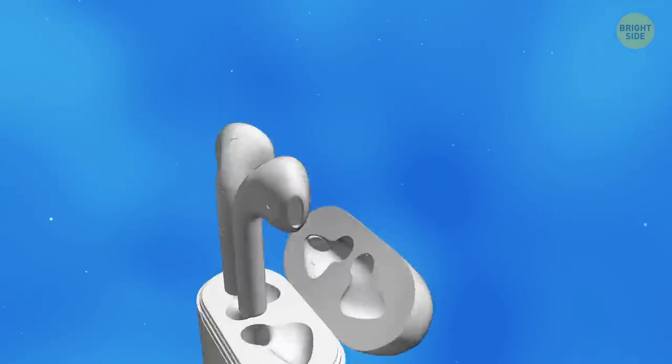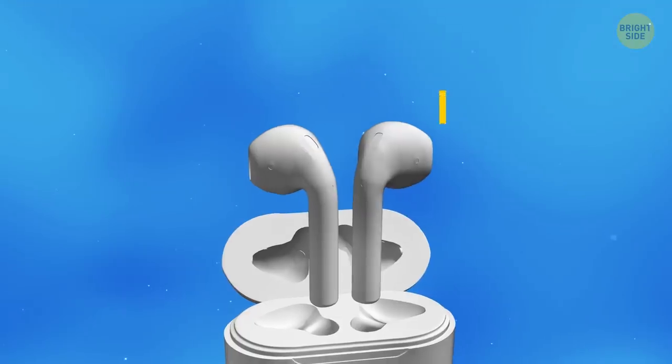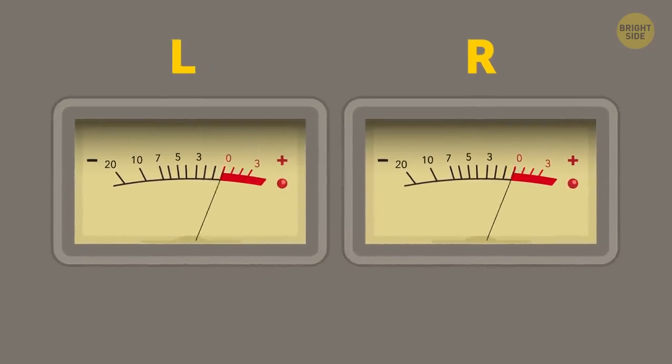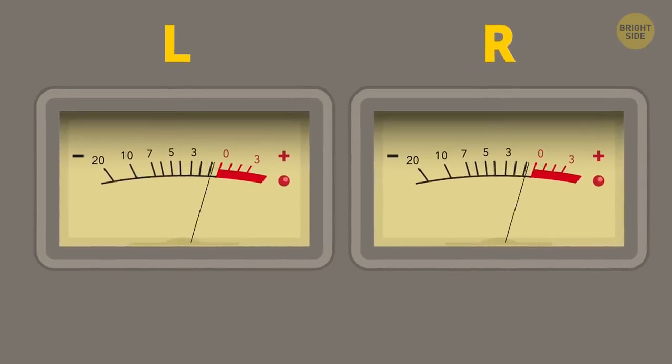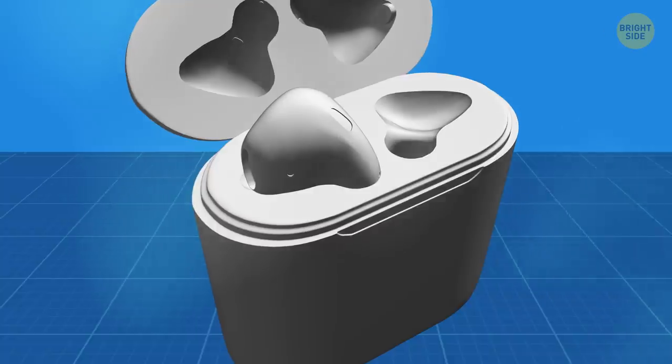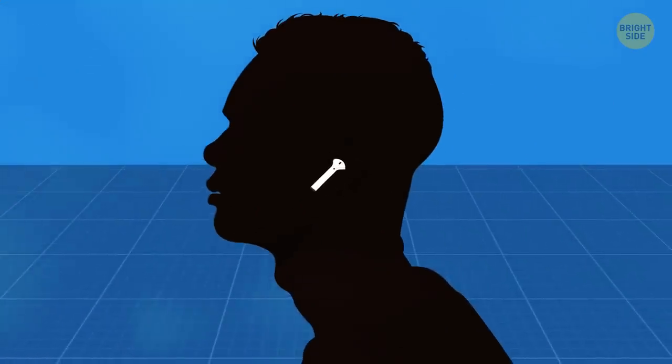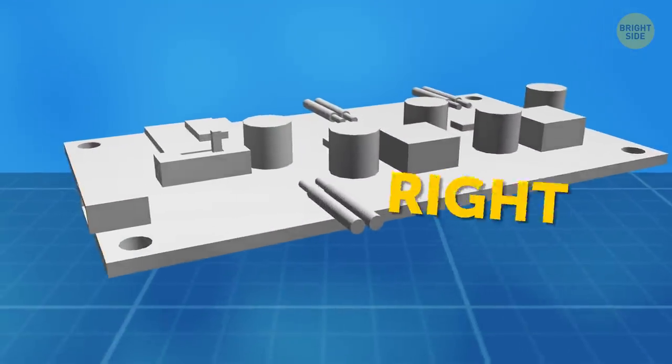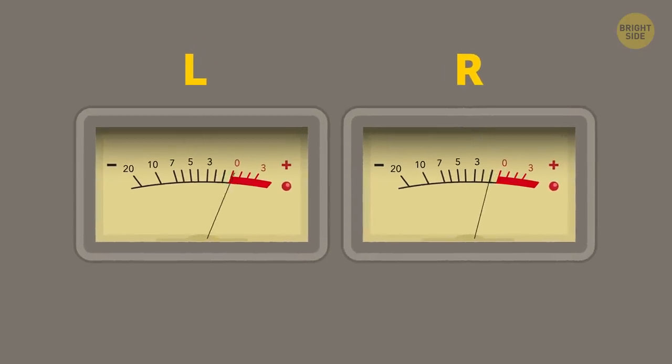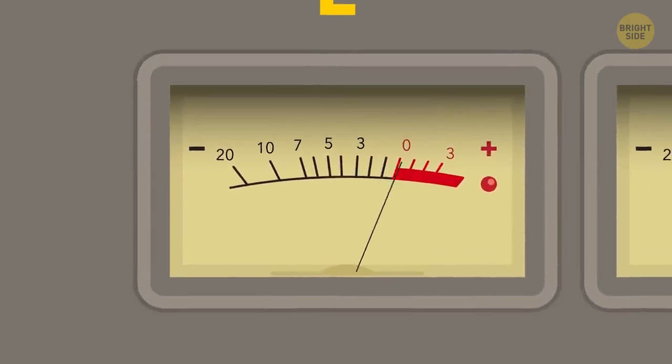Besides, AirPods are designed in such a clever way that when you're using one earbud, you still hear both the left and right sides of the stereo audio file. But there's one condition, one of the earbuds has to be either in the case or in your friend's ear. Usually, stereo recordings have right and left channel audio tracks. And if you're wearing just one earbud, you can miss something that's going on in the other one.